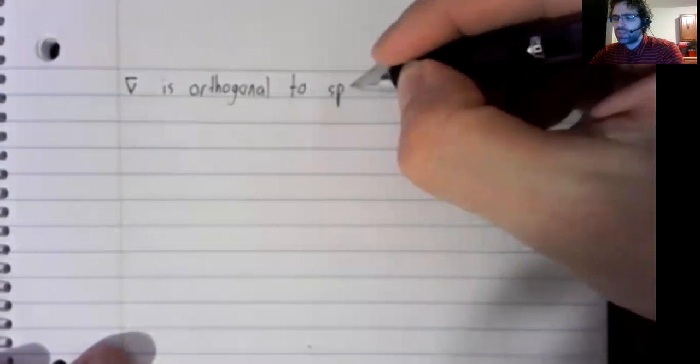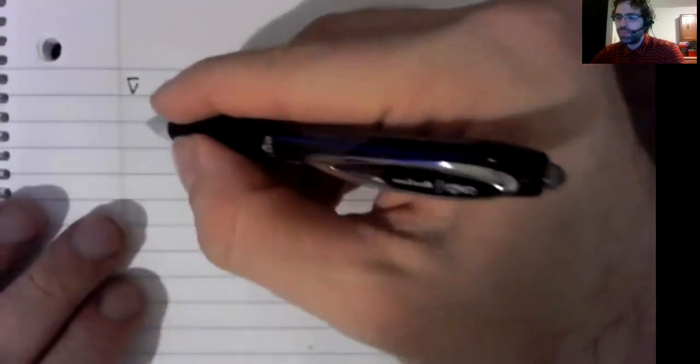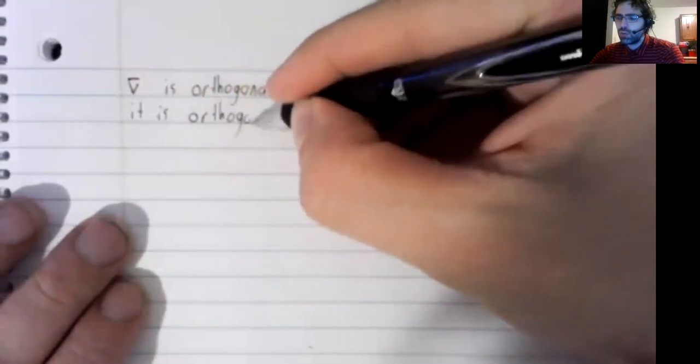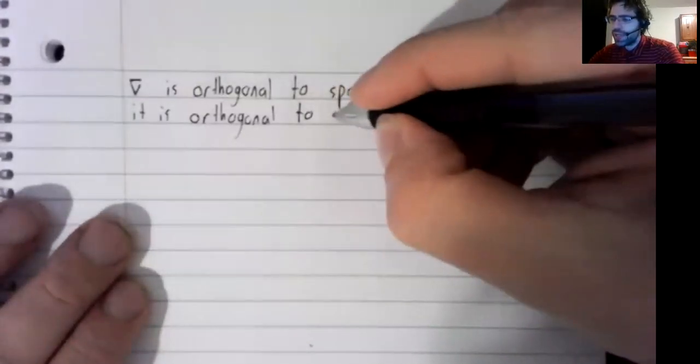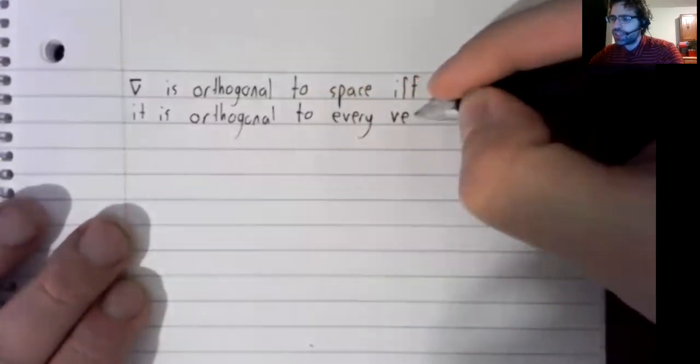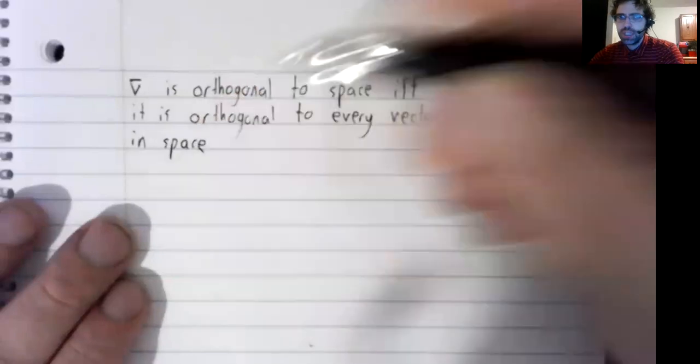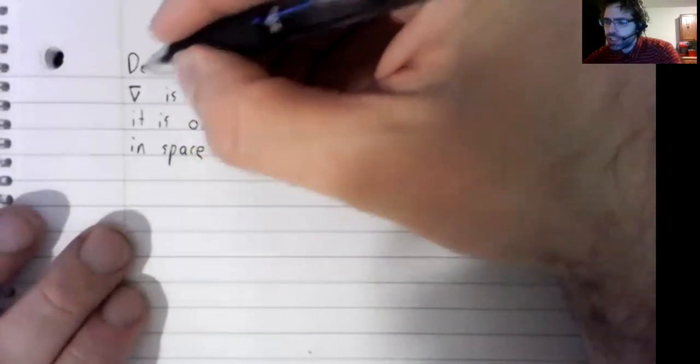Now we will say that a vector is orthogonal to a space if and only if it is orthogonal to every vector in the space, and I know I kind of stated this as a theorem. It's really a definition.